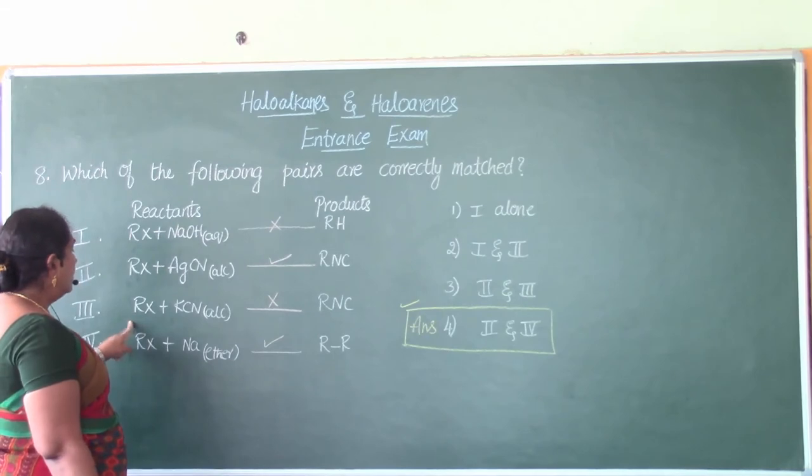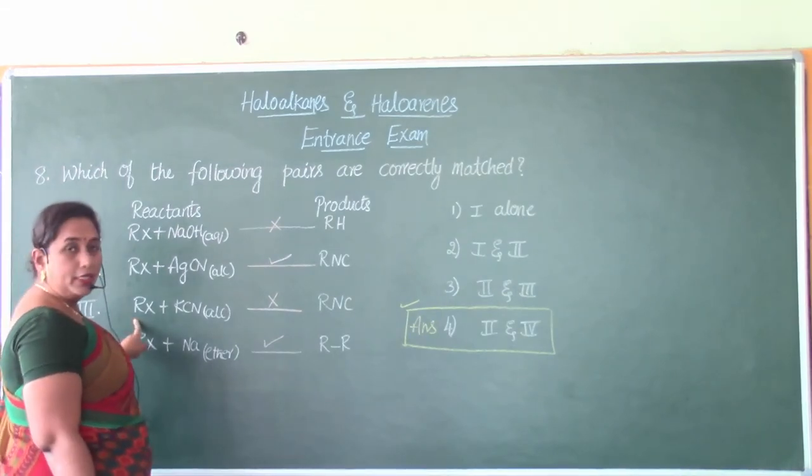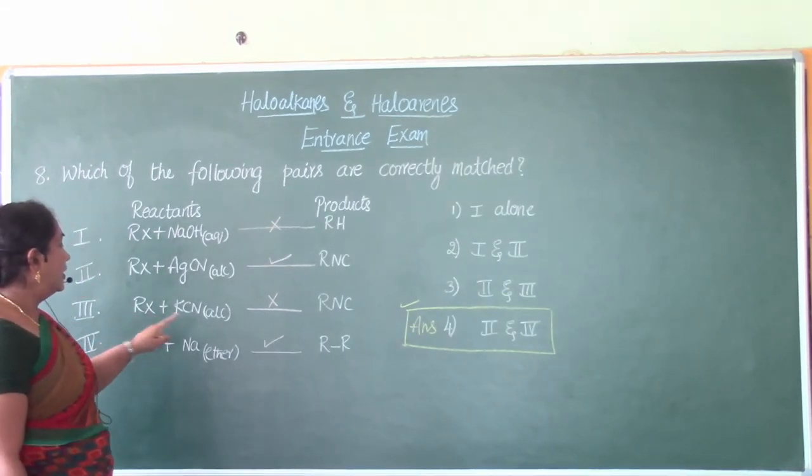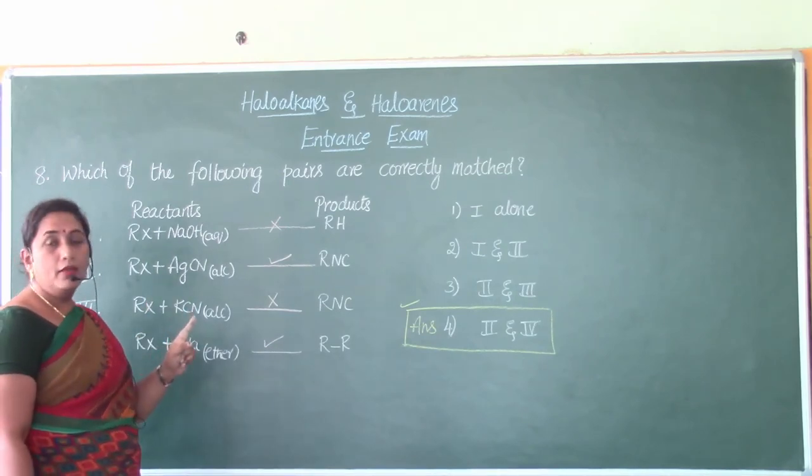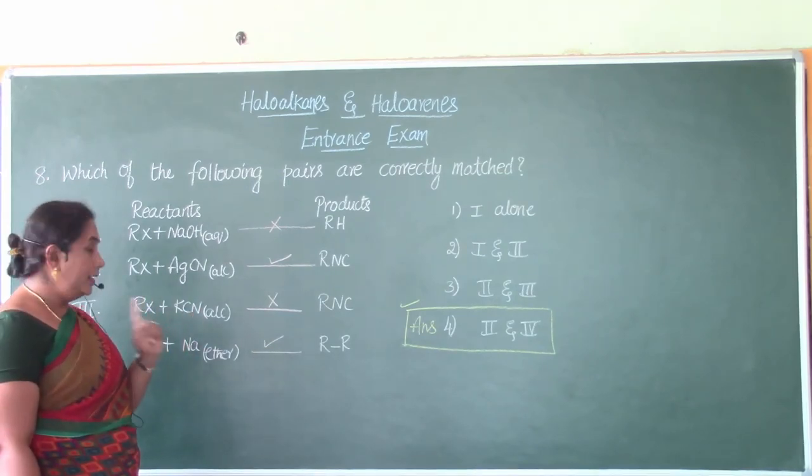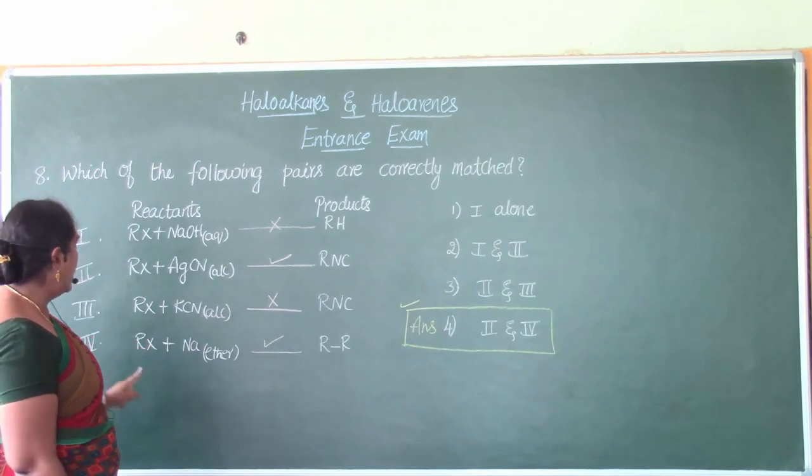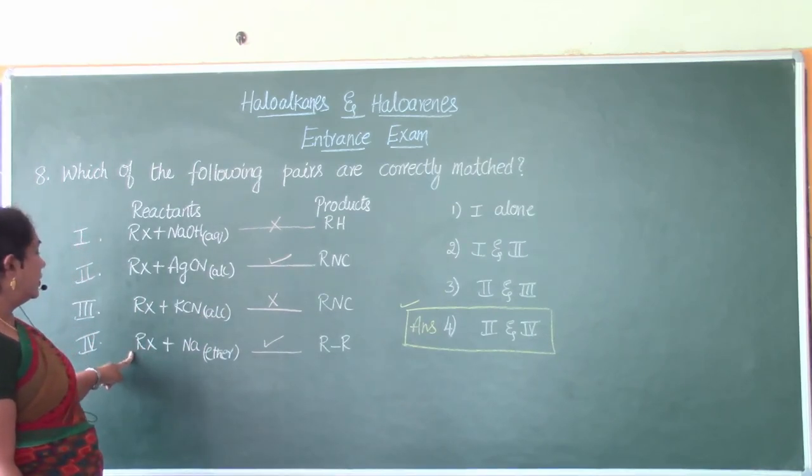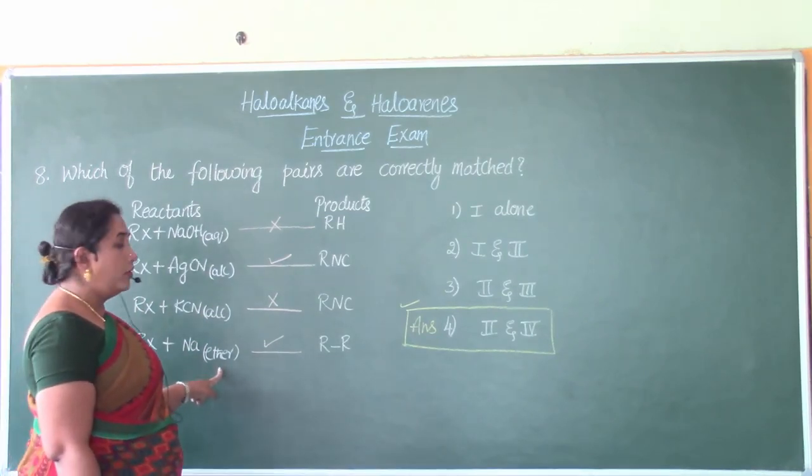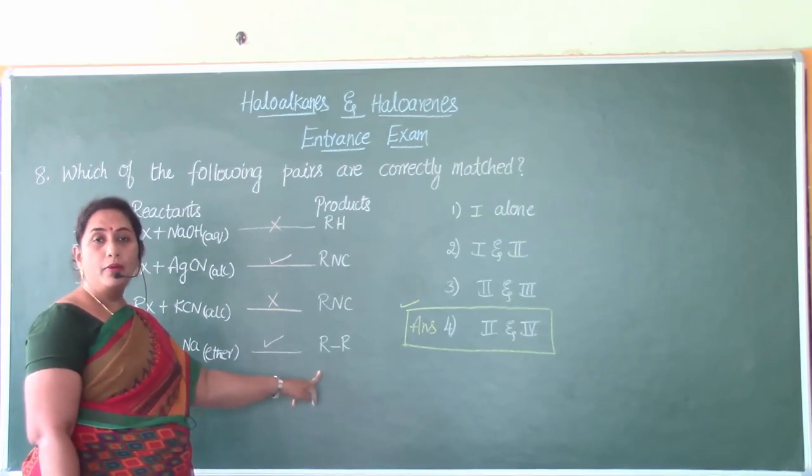Then haloalkanes, general representation RX, you know this, when treated with alcoholic KCN will form cyanides or nitriles. It will not form isocyanide. And haloalkanes when treated with metallic sodium suspended in dry ether, it will always form higher alkane. Again, we are talking with respect to Wurtz reaction.